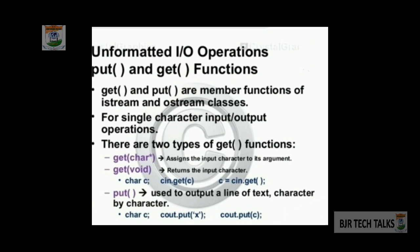Get and put are member functions of istream and ostream classes. Get is a member function of the istream class, and put is a member function of the ostream class — for single character input and output respectively. There are two types of get functions: get(char), which assigns the input character to its argument, meaning the get function has an argument of character type; and get(void), which returns the input character.